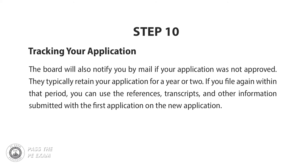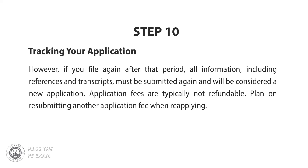The board will also notify you by mail if your application was not approved. They typically retain your application for a year or two. If you file again within that period, you can use the references, transcripts, and other information submitted with the first application. However, if you file again after that period, all information including references and transcripts must be submitted again and will be considered a new application. Application fees are typically not refundable, so plan on resubmitting another application fee when reapplying.